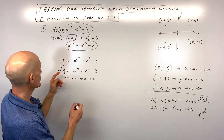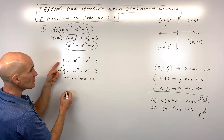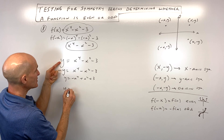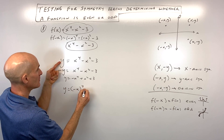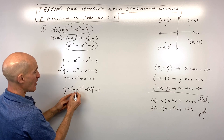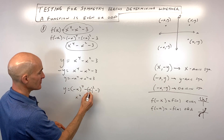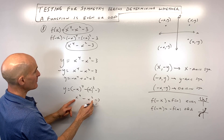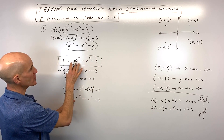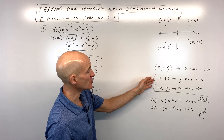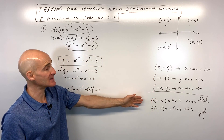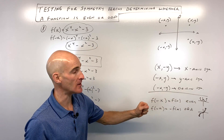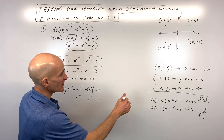For y-axis symmetry, starting from the original equation, we replace x with negative x and keep y positive. Since negative x raised to an even power is positive, we get back y = x⁴ − x² − 3, which matches the original equation. So it has y-axis symmetry — which we already knew because we found it was even.